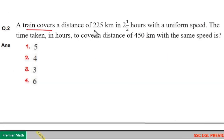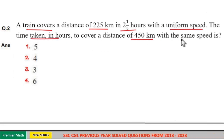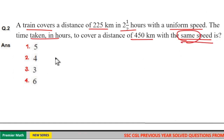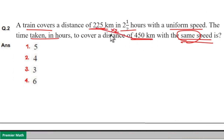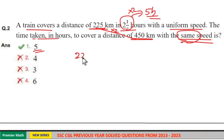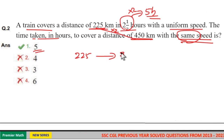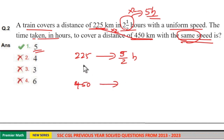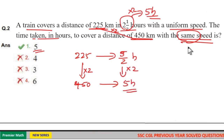A train covers a distance of 225 km in 2 and a half hours with uniform speed. The time taken to cover 450 km with the same speed: here speed is the same, first distance is 225 and second distance is 450. 225 into 2 equals 450, which means time will be double. First time is 2 and a half hours, that is 5 by 2 hours. Then second time will be 5 by 2 into 2 equals 5 hours. So option 1 is your answer.